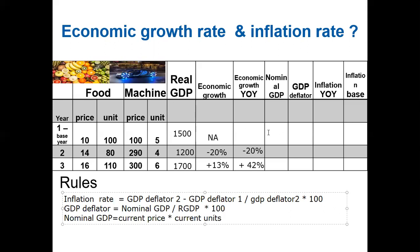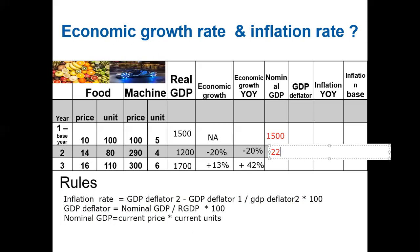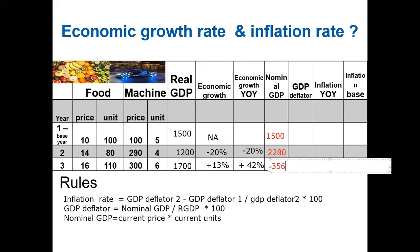Nominal GDP for year one: current prices times current units gives 1500. For year two: 14 times 80, plus 290 times 4 gives nominal GDP of 2280. For year three: 16 times 110, plus 300 times 6 gives nominal GDP of 3560.